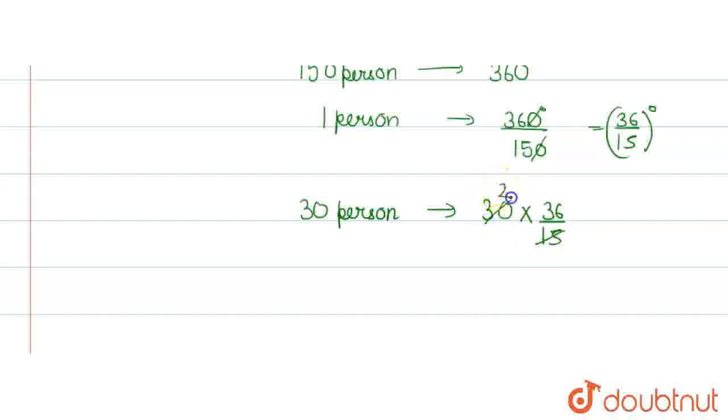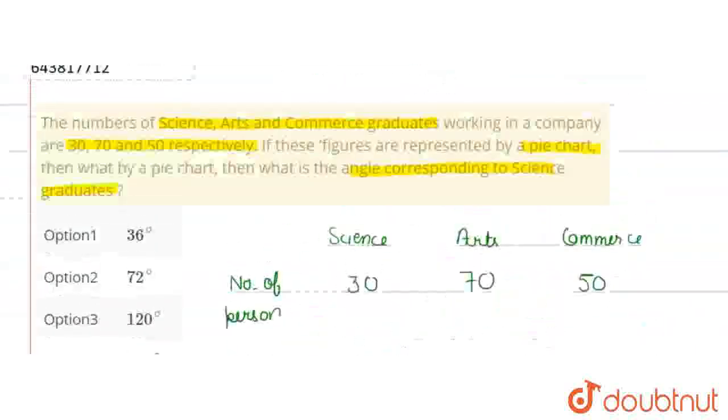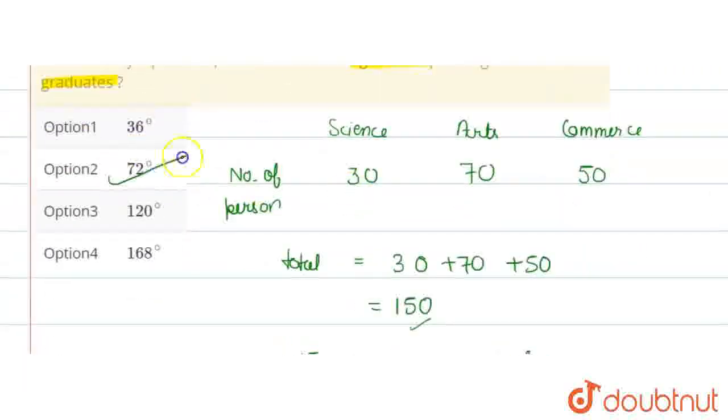Then 2 times 36 is 72 degrees. So here, 30 science graduates corresponds to 72 degrees. So the correct answer is 72 degrees. Thank you.